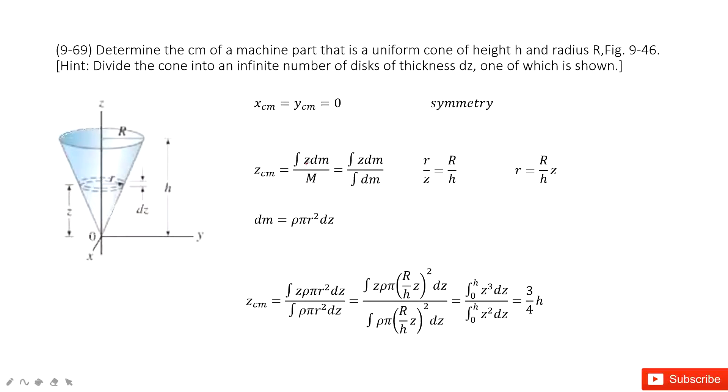For z component, we do the integral for z times dm. And this dm comes from this surface. So we can consider this cone is combined by infinity number of disks of thickness dz. So the dm is just these disks.